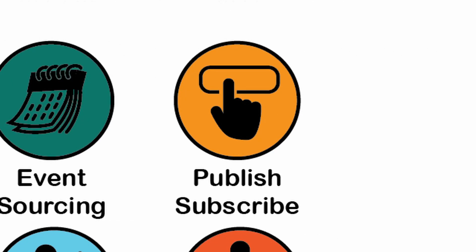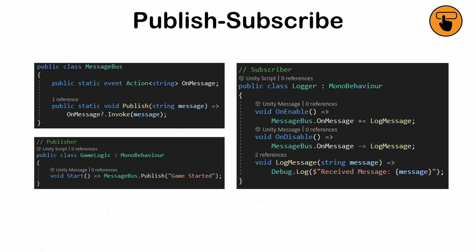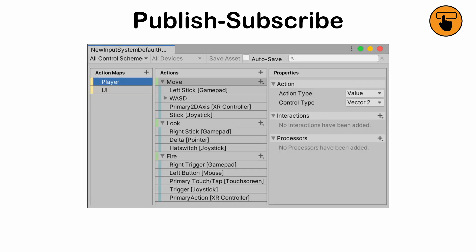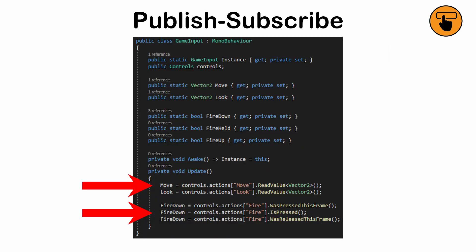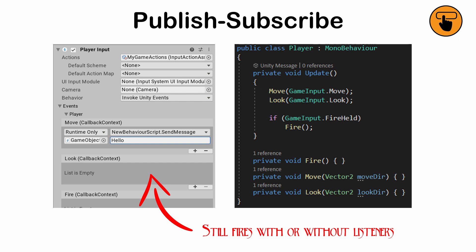The publish-subscribe pattern. A messaging pattern where publishers send messages without knowing who subscribes to them, and subscribers react without knowing their publisher. A logging system is one example of this pattern. The input system in Unity is another example, where inputs are treated as actions that fire whenever a button is pressed, regardless of whether or not any scripts are listening for said input.